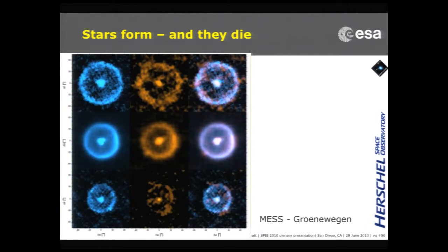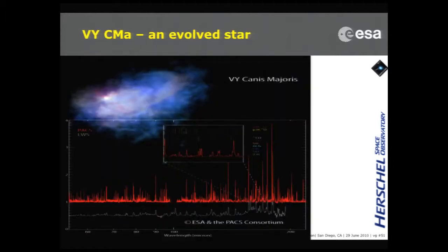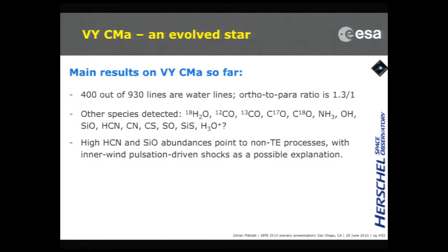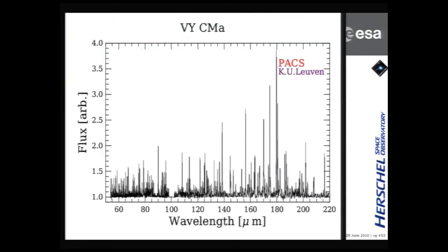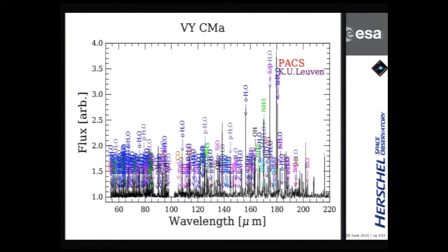Stars form, but they also die. Shown here are images of a few evolved stars which are losing mass. Looking at one such star in greater detail — perhaps the best example because it's the biggest one we have — when we do spectroscopy on this star with PACS, you get an enormous amount of lines: a thousand lines from many different species. In order to bring some order into this, you need to identify all the lines, but it gets messy because there are simply too many of them.